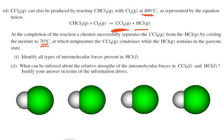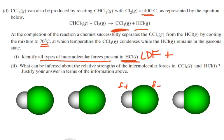Identify all types of intermolecular forces present in HCl. Anything with electrons will have London dispersion forces. HCl is a polar molecule because chlorine has a much higher electronegativity than hydrogen, but not so much that it becomes ionic. In pure HCl, there's a slightly negative charge on one side and slightly positive on the other, creating attractions between the positive end of one molecule and the negative end of another — that is dipole-dipole interaction.